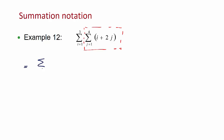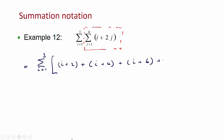That will equal — we're still summing i equals 1 to 3 — in brackets: when j equals 1, it'll be i plus 2 times 1, which is 2. When j equals 2, it'll be plus i plus 2 times 2, which is 4. When j equals 3, it'll be plus i plus 3 times 2, which is 6. Plus when j equals 4, it'll be plus i plus 2 times 4, which is 8.